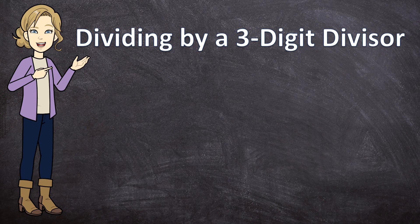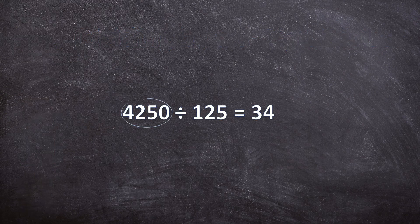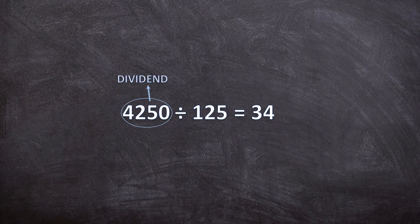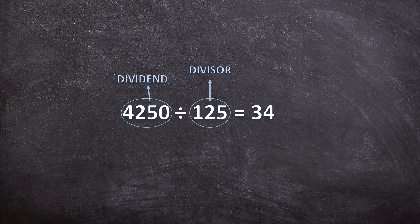But before we get started, just a quick recap of the terminology we will be using in this video. First, the number we will be dividing is called the dividend. The number we will be dividing with is called the divisor, and the answer is called the quotient.